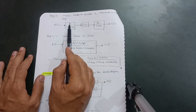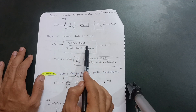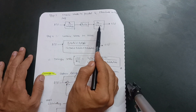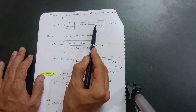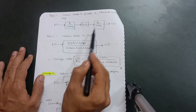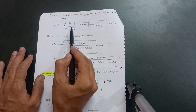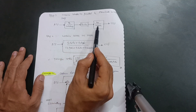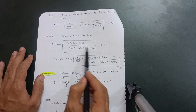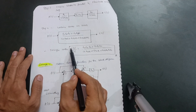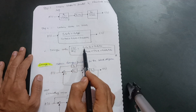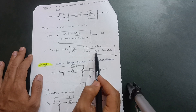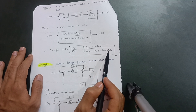Combining the series blocks gives: G1·G2·G4 + G1·G3·G4 in the numerator. For the denominator, multiplying (1 + G1·G2·H2) by (1 + G4·H1) gives: 1 + G4·H1 + G1·G2·H2 + G1·G2·G4·H1·H2. Therefore the transfer function C(s)/R(s) equals (G1·G2·G4 + G1·G3·G4) / (1 + G4·H1 + G1·G2·H2 + G1·G2·G4·H1·H2).